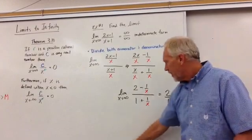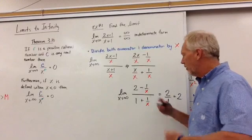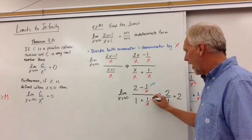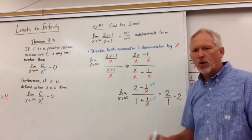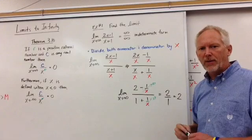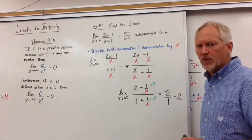And then x over x is 1, and so plus 1 over x. And now, as we take the limit, as x goes to zero, this will go to zero, and that will go to zero. And so we're left with just 2 over 1, or the limit being 2.